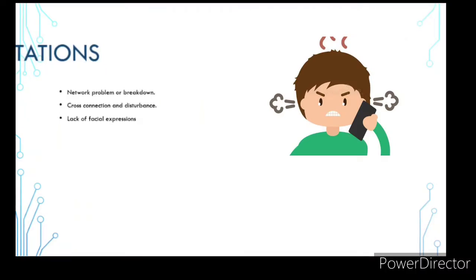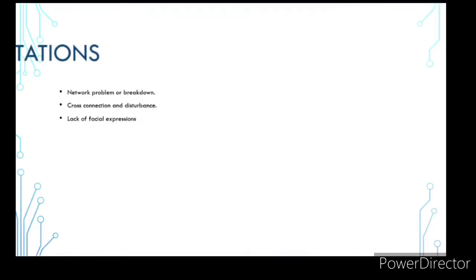Cross connection means where you want to talk about. If you want to talk about it, then you have to get a connection or somewhere else. Or there is some disturbance. Like, the rain is coming out and weather is not good. Therefore, there is a lot of noise and you cannot talk about. Lack of facial expression.